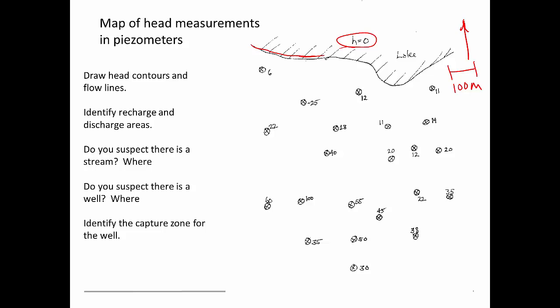So what I want to do is take these point measurements and develop a contour map on this water table, and I want to address these other questions here about recharge and discharge areas, whether there's a stream, a well, and then draw the capture zone and flow paths to the well.